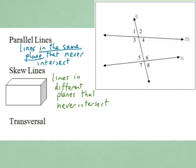What would skew lines look like? Let me illustrate using this prism. Let's consider the line that includes this edge of the prism, and then consider the line that forms this other edge. Will those lines ever intersect? No, because one is elevated higher than the other. So because of this, those lines will never intersect, even though they're going in different directions.